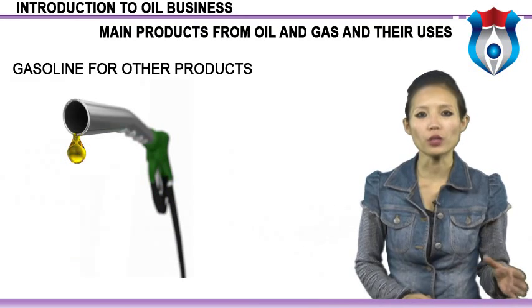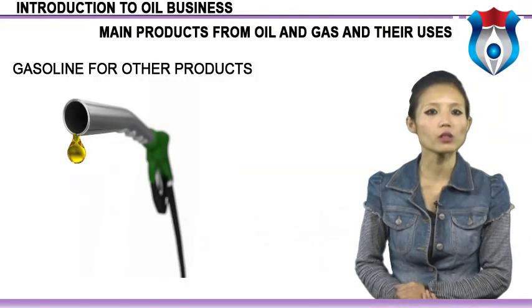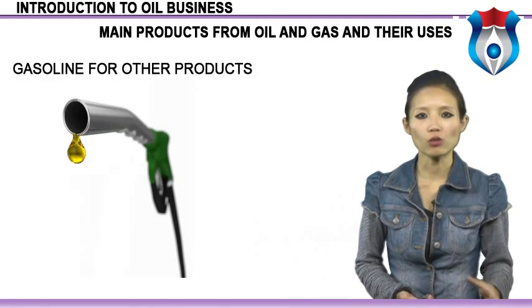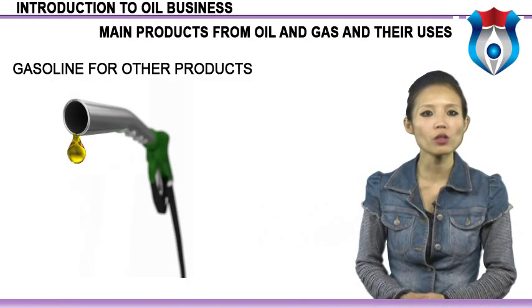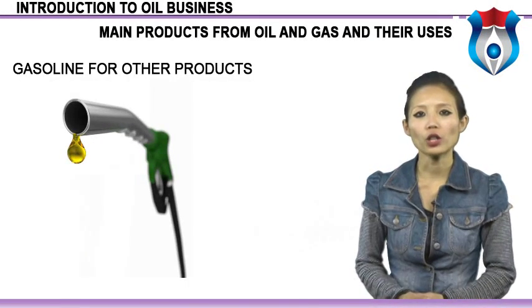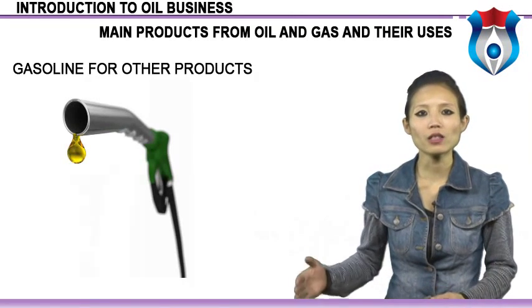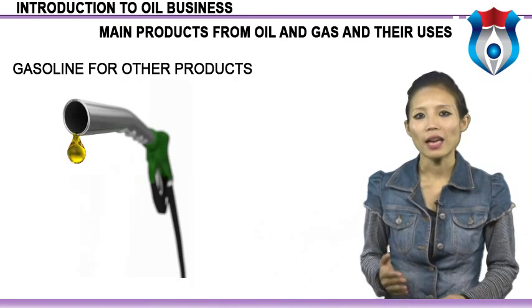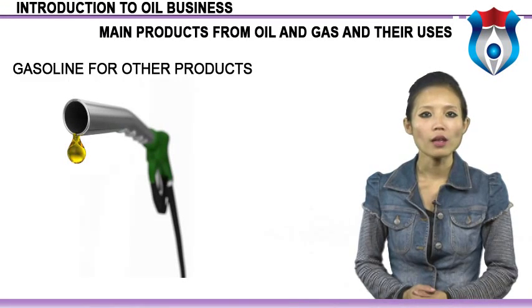One of the most useful compounds in the gasoline range is benzene, which serves as a base for products such as insecticides, weed killers, dyes, drugs, aspirin, industrial solvents, plastic, nylon fibers, polyurethane foams, rubbers, etc. Benzene can be synthesized from common naphthenes such as hexane and methylcyclopentane with the help of a platinum catalyst.